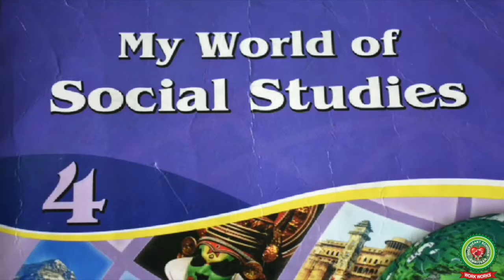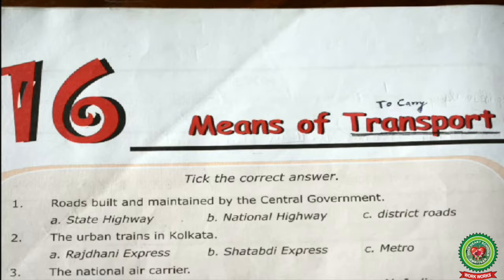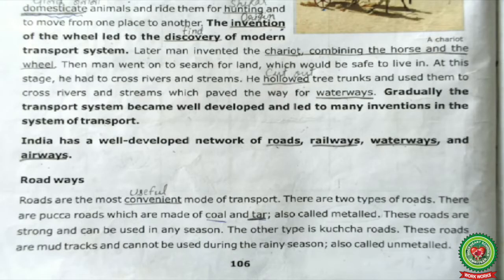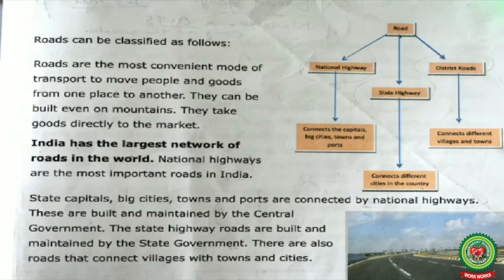Hello students, welcome to SSD class. Take out chapter number 16 — Means of Transport. Yesterday we discussed about roadways, its types, its classification, and important routes like GT Road and the Golden Quadrilateral. So today we will do map work, which will make your understanding of these topics more clear.